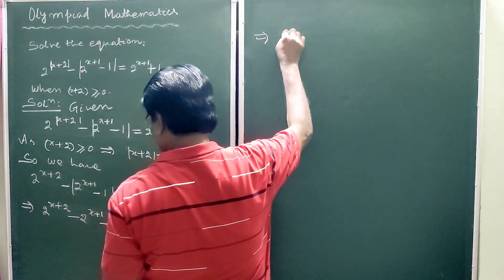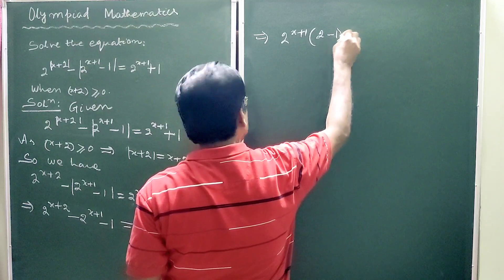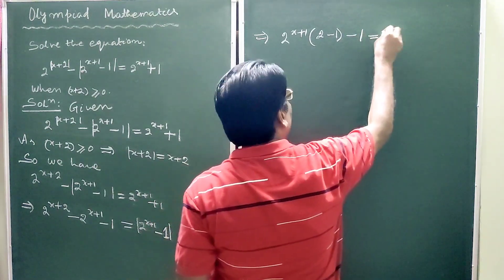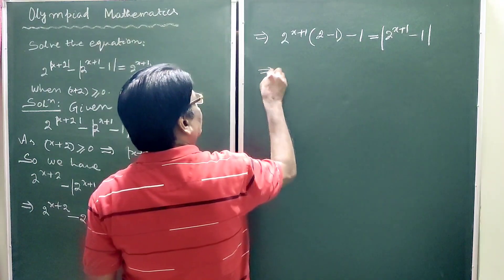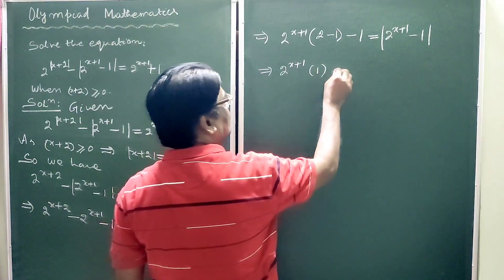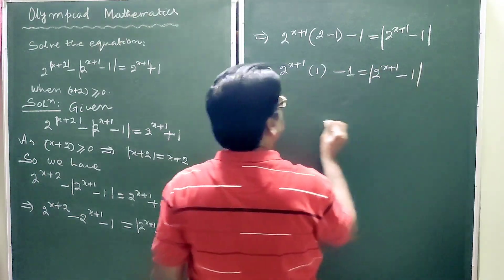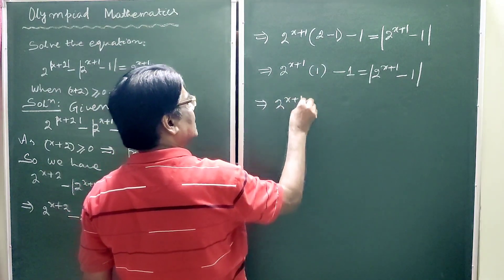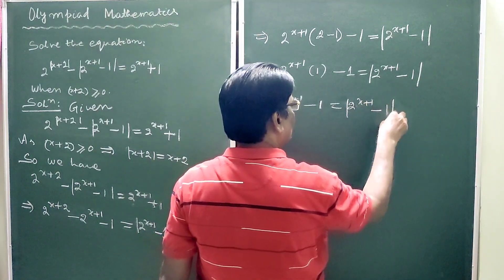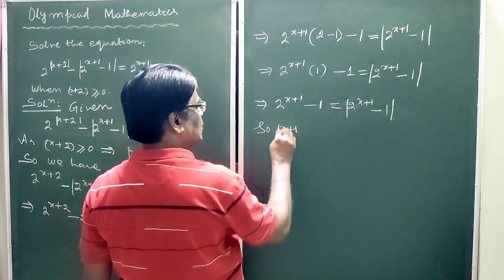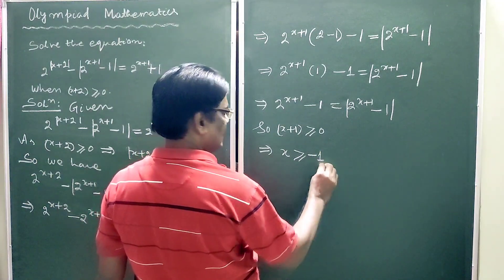This implies 2 to the power (x+1) minus 1 is greater than or equal to the absolute value of 2 to the power (x+1) minus 1. So 2 to the power (x+1) is greater than or equal to 0, meaning x plus 1 is greater than or equal to 0. This implies x is greater than or equal to minus 1. So here is the answer.